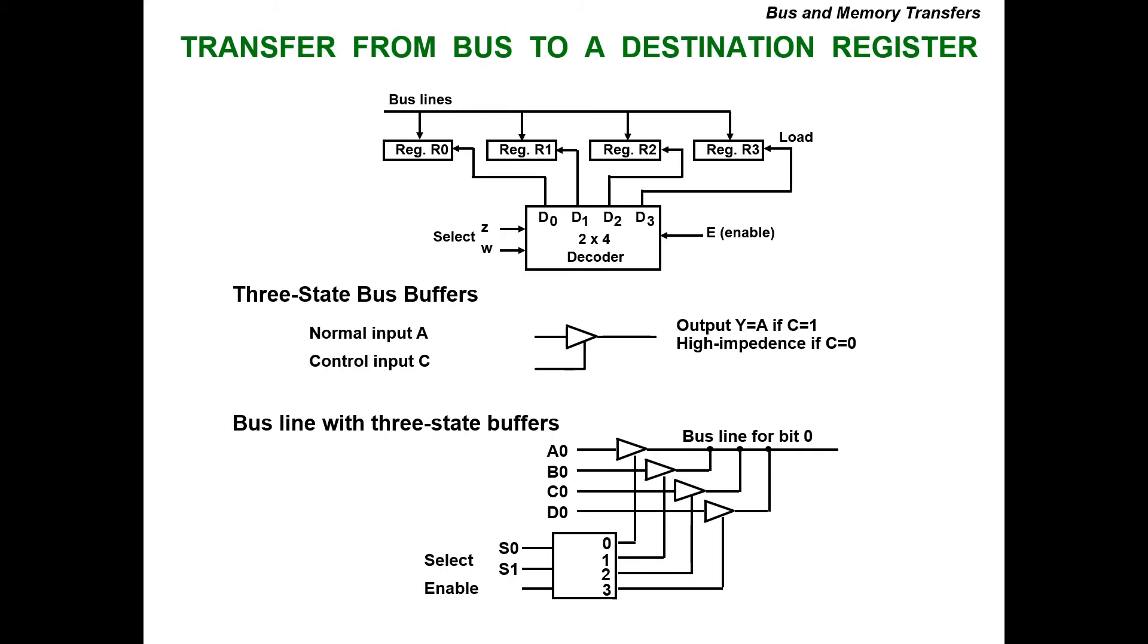Bus lines with three-state buffers: we have a two-into-four decoder and we have two selection inputs called Z and W, and we have an enable input. The decoder outputs are D0, D1, D2, D3, connected to registers R0, R1, R2, R3. In the three-state bus buffer, normal input A, control input C, output Y equals A if C equals one. If C equals zero, it goes to high impedance Z.